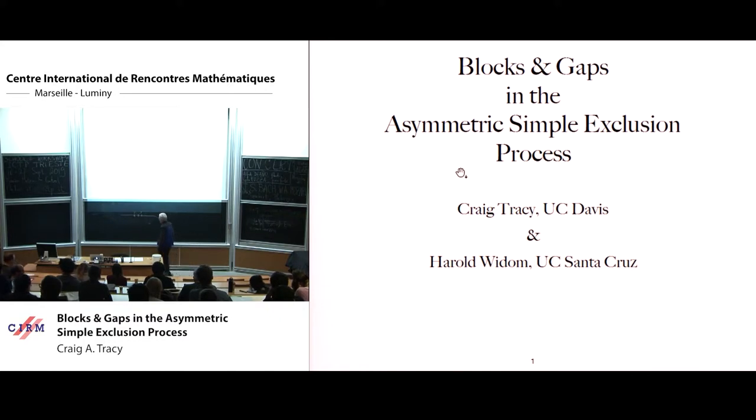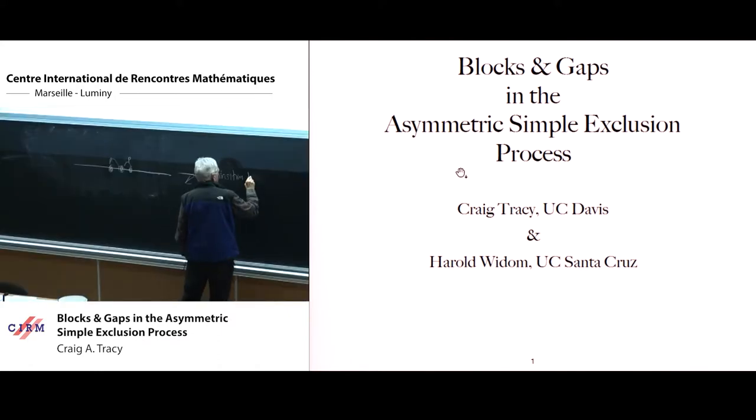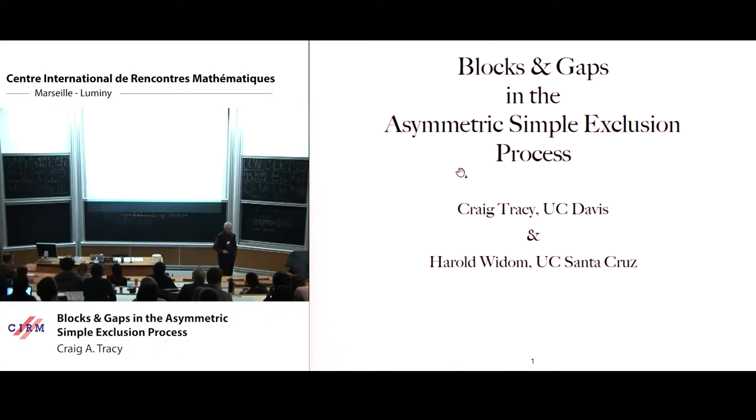It has a nice scaling limit, and the basic quantity is the transition probability. You imagine you start at a point Y, and you ask what's the probability at time T that you're at position X. I'm considering random walk with continuous time, so you imagine this particle has a clock which is an exponential distribution with mean one.